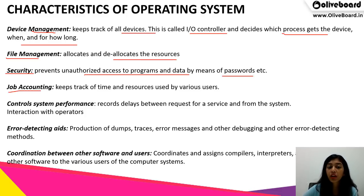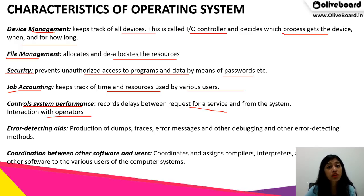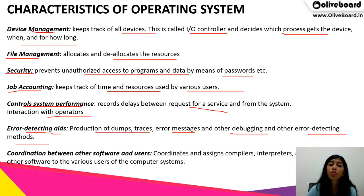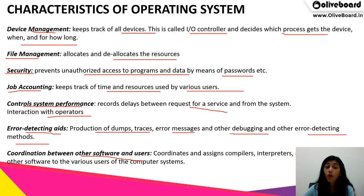Job accounting keeps track of time and resources used by various users. Control system performance records delays between requests for a service and interactions between operators — all controlled by the operating system. Error detecting aids include production of dumps, traces, error messages, and other debugging methods, all taken care of by the operating system. Coordination between other software and users: it coordinates and assigns compilers, operators, interpreters, and other software to various users of the computer system.